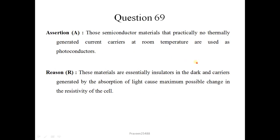Question 69. Those semiconductor materials that have practically no thermally generated current carriers at room temperature are used as photoconductors. This is correct statement. These materials are essentially insulators in the dark and carriers generated by the absorption of light cause maximum possible change in resistivity of the cells. This is also correct. Correct option is 1.